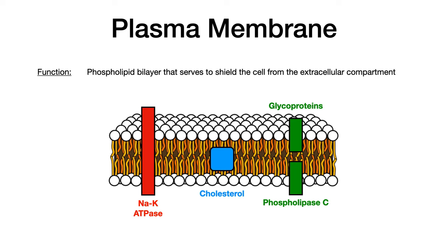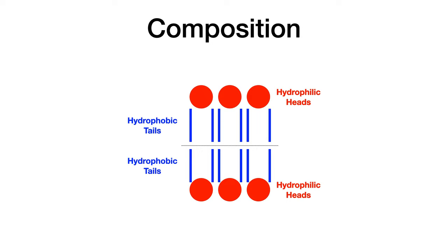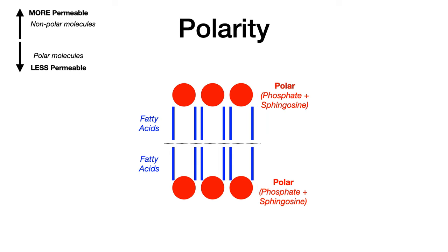The plasma membrane has various elements embedded within it and they all serve different roles. As far as the actual composition of the membrane, it is composed of hydrophilic or water-loving heads shown in red, and hydrophobic or water-fearing tails shown in blue. Those hydrophilic heads are polar and they are composed of phosphate and sphingosine. The fact that it's negatively charged makes the head polar, which makes it more permeable to nonpolar molecules and less permeable to polar molecules.